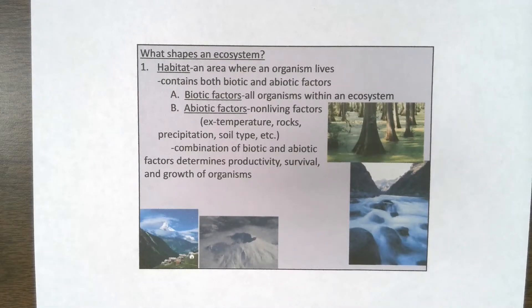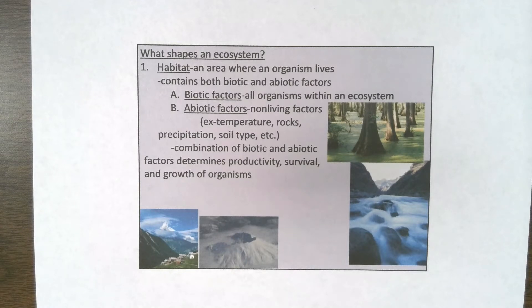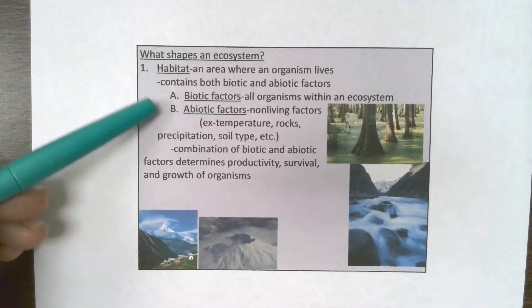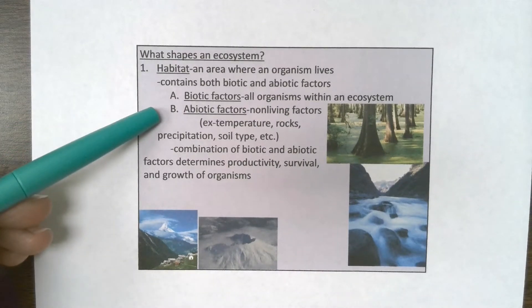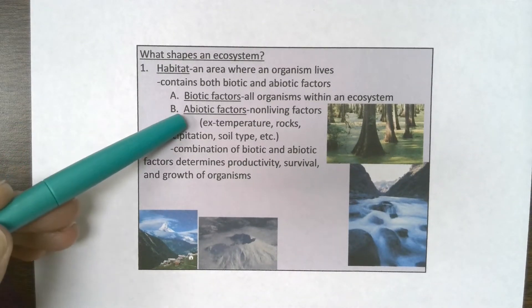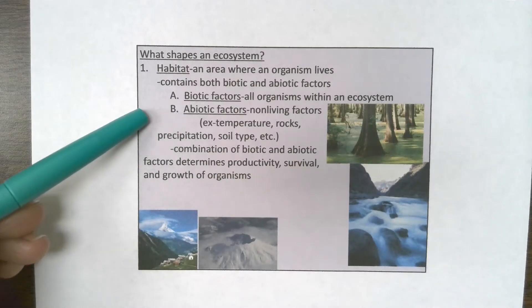So, definition-wise, habitat is something we've got to talk about here. Simple definition: the area where an organism lives. When we talk about habitats, we're going to talk about both living or biotic factors and non-living or abiotic factors. We've already covered both of those terms — when you put 'A' in front of something, it makes it mean 'not,' so these are our non-living factors.